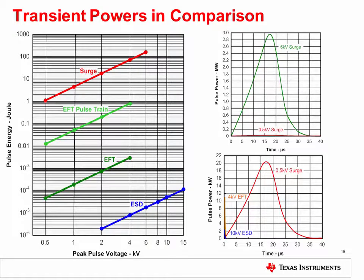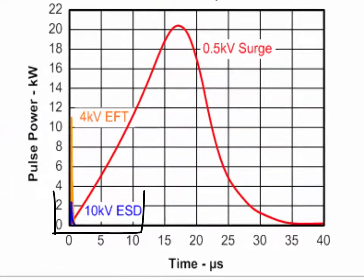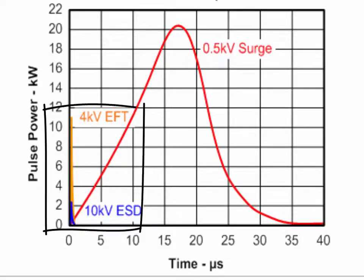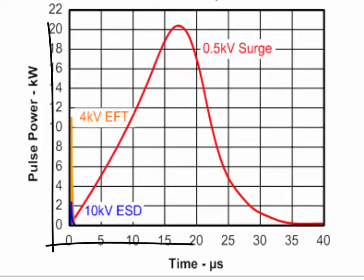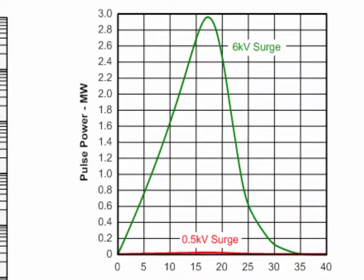Here we compare the pulse power of the EFT and surge transients with the power caused by an ESD transient. It's clear from the plot on the left that the energy of surge and EFT is orders of magnitude larger than the energy of ESD. In the plot on the bottom right, a 10 kilovolt ESD transient is represented by the small blue pulse in the bottom left corner. EFT has several times more pulse power, and a 500-volt surge has even more power over a much longer time interval. This type of surge is representative of factory environments in industrial and process automation. The plot on the top right shows the enormous power of a 6 kilovolt surge transient, which typically occurs in e-metering applications with power generating and power grid systems. Note that the unit of pulse power changes from kilowatts to megawatts, causing the 500-volt surge to nearly disappear.